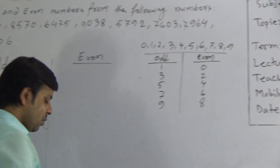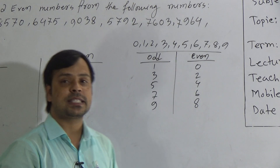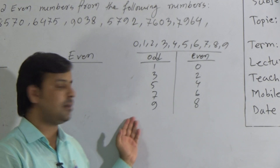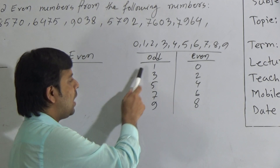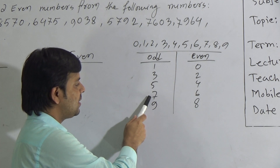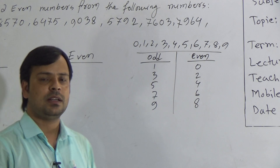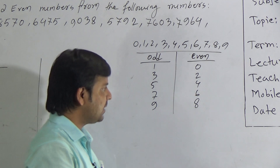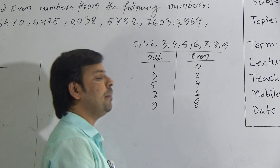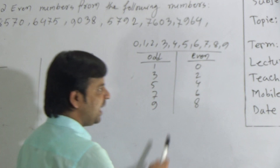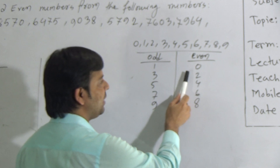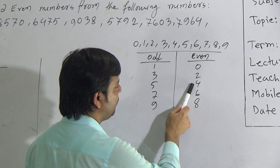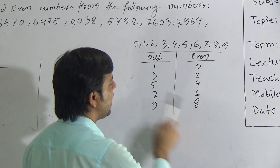So you can say a number is set to be odd if the unit place of a number is 1, 3, 5, 7, or 9. Conversely, a number is set to be even if the unit place is 0, 2, 4, 6, or 8.